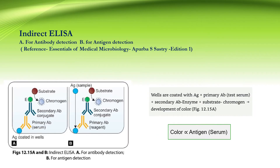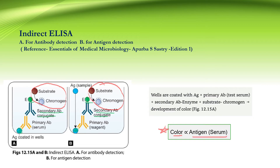In indirect ELISA, microtiter well plates are pre-coated with the antigens. Here, the secondary antibody is labelled with the enzyme instead of the primary antibody. Test serum containing primary antibodies specific to the antigen is added to the wells. Then after washing, enzyme-labelled secondary antibodies are added, and then the substrate chromogen system is added. Colour development is directly proportional to the antigen present in the test serum.